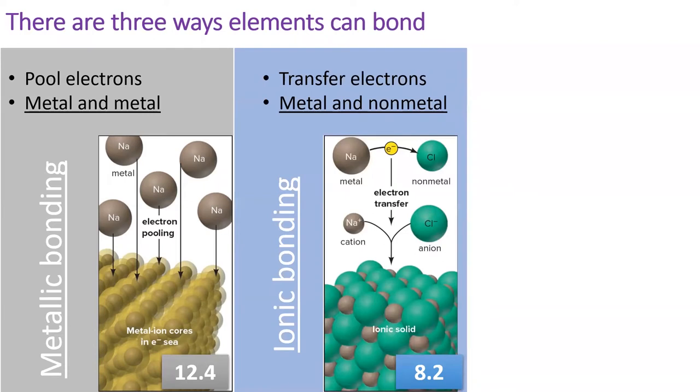When a metal and a non-metal form a bond, the non-metal steals electrons from the metal leading to two charged ions. The ions attract each other and form an ionic bond, which will be covered in the next section 8.2.